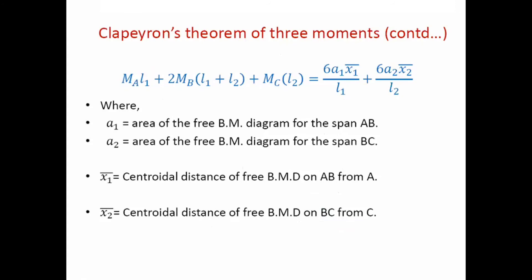On the right hand side, we can see a1 which is the area of the free bending moment diagram for span AB, and a2 is the area of the free bending moment diagram for span BC.